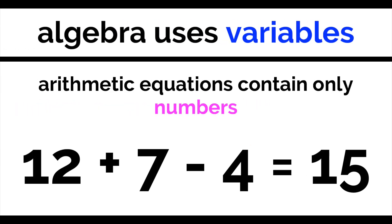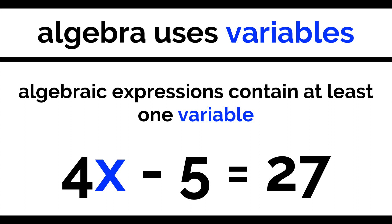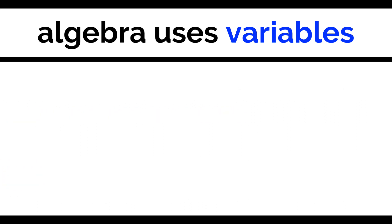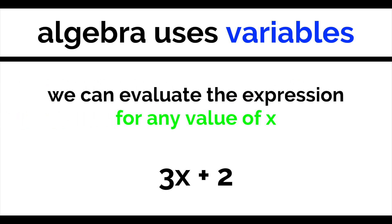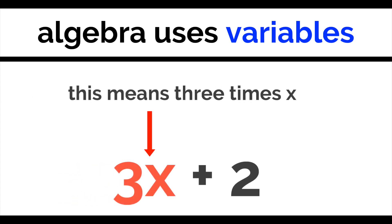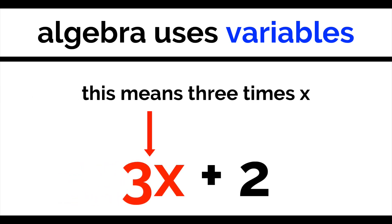In arithmetic, our equations simply contain numbers and arithmetic operations. An algebraic expression will always include one or more variables as well as some numbers and operations. For example, 3x plus 2 is an algebraic expression. We can evaluate the expression for any value of x that we choose. We simply plug the value into the expression, understanding that we can represent the multiplication of two numbers by simply placing them next to each other.